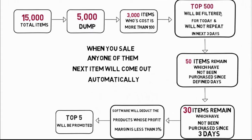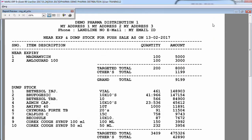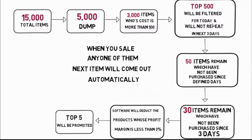The next process is that the top items are filtered for today and will not repeat for the next 3 days — meaning this list updates every 3 days. For example, if there are 30 near expiry items total, 10 items will be displayed today. After 3 days, the next 10 items will be displayed. Then 3 days later, the remaining 10 items will be shown. Then again 3 days later, the first 10 items will appear again, and so this rotation continues.